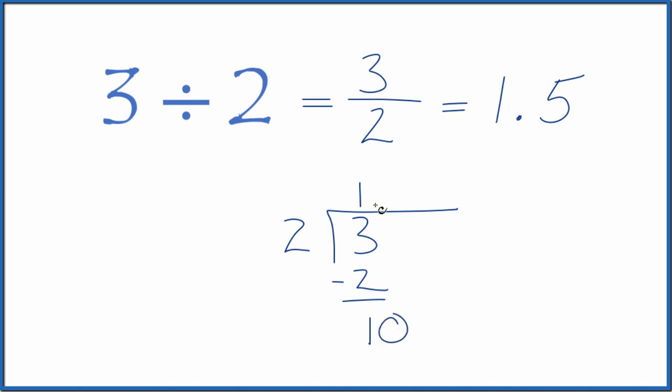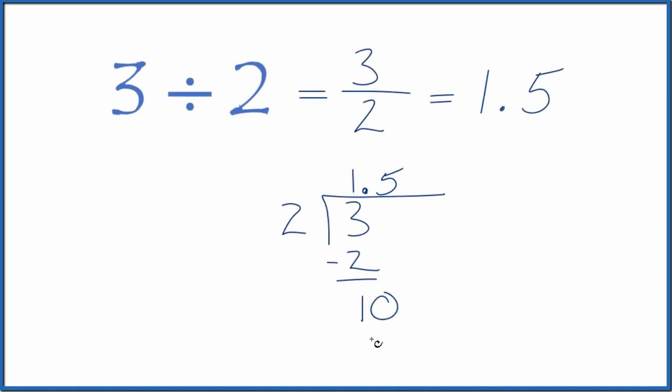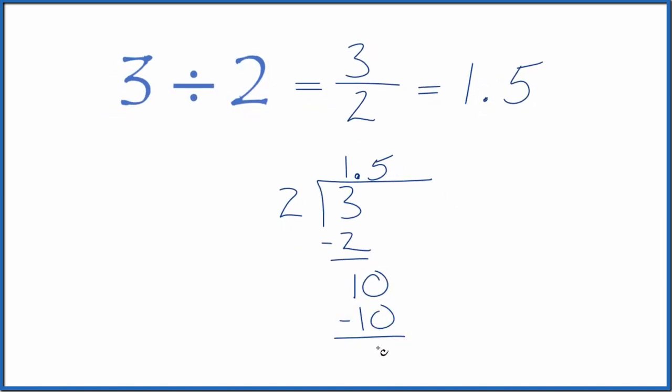If we call this 10 and put a decimal point here, we can then say 5 times 2, that's 10. We subtract, no remainder.